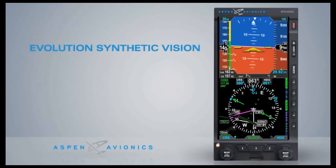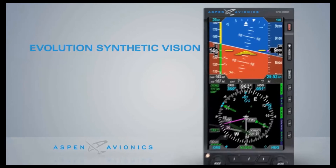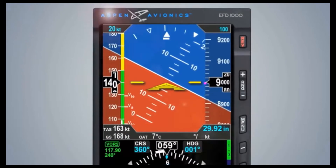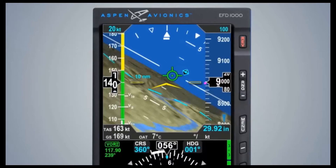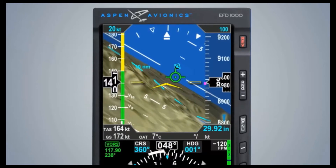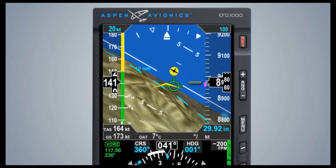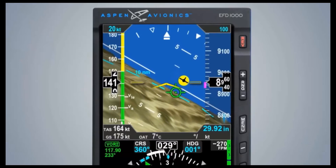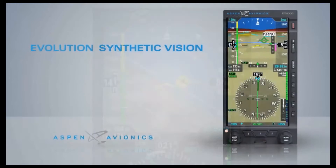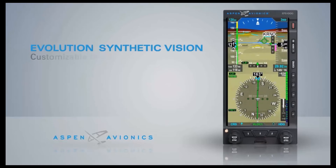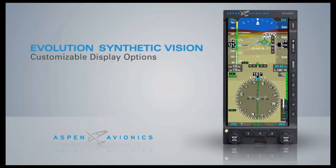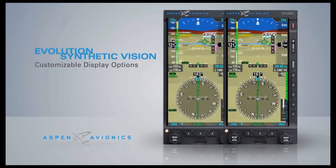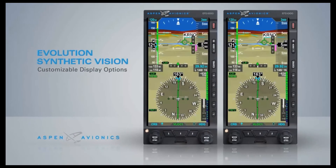ESV replaces the traditional blue over brown background of the legacy attitude indicator with a real-time computer generated 3D view of terrain, obstacles, and optional traffic if configured with Evolution Hazard Awareness. Unique to Evolution Synthetic Vision is the ability to customize the display layout to suit individual preferences, including the flexibility to toggle different fields of view.